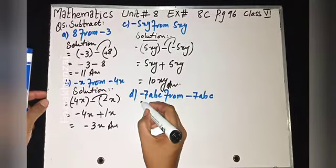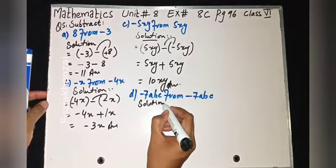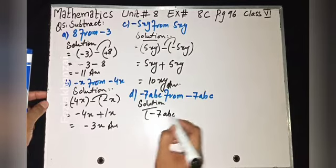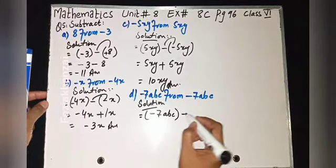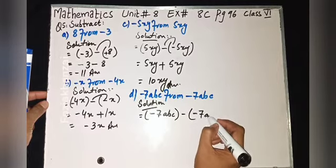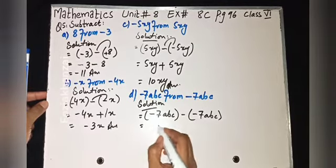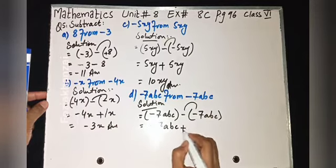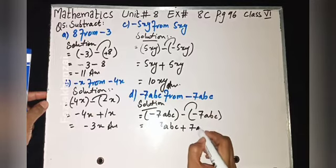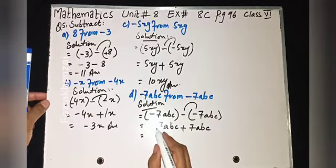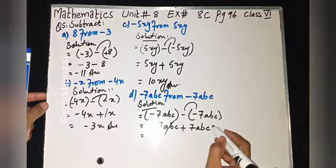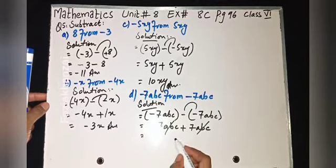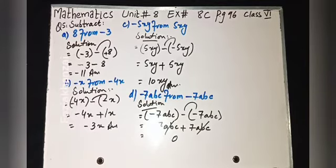Part d: after 'from', copy first: minus seven xy, bracket close, minus minus seven xy. Remove round bracket: minus seven xy minus minus gives plus seven xy. Minus seven xy plus seven xy — same variable, same coefficient with opposite sign — they cancel. Zero is left as the answer.